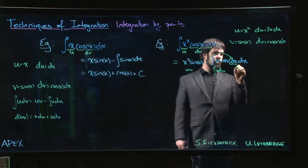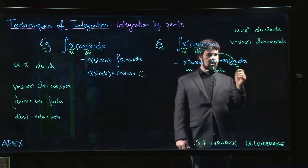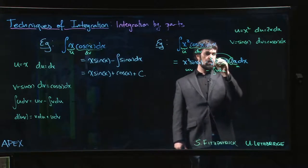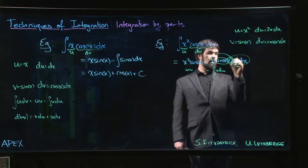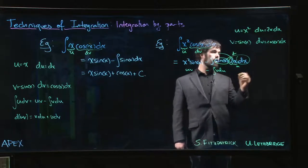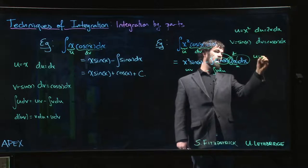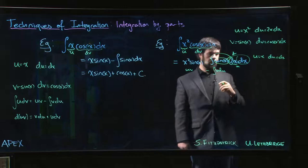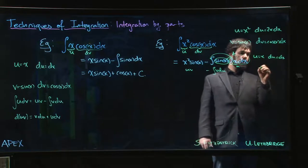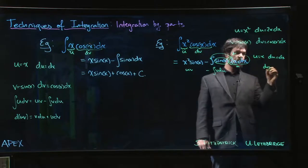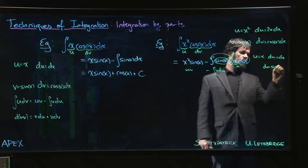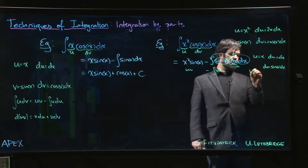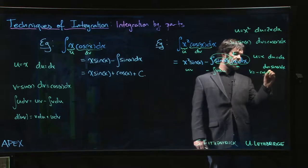We want this to be our new u and we want this together with that to be v. So u is going to be x, du is dx. And if dv is sine x dx, that means that v must be negative cos x.